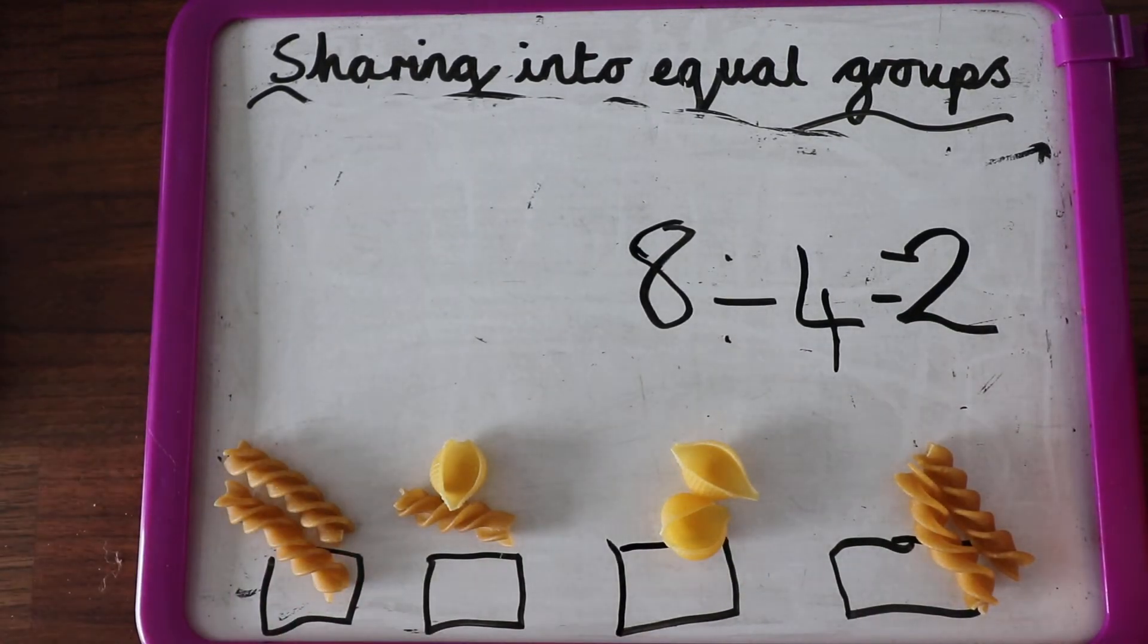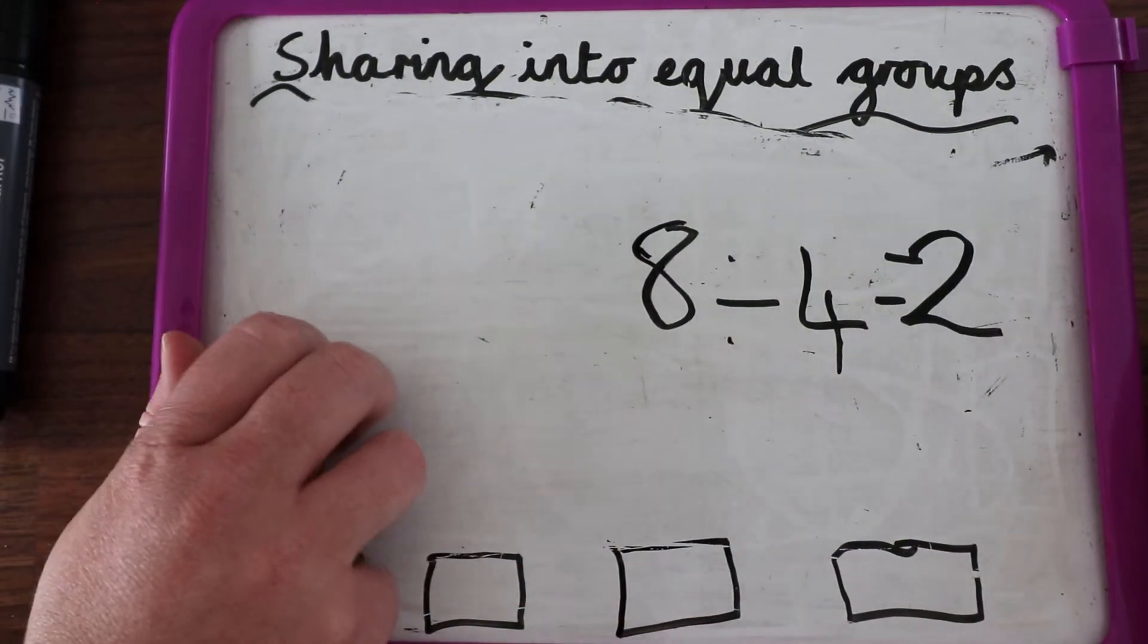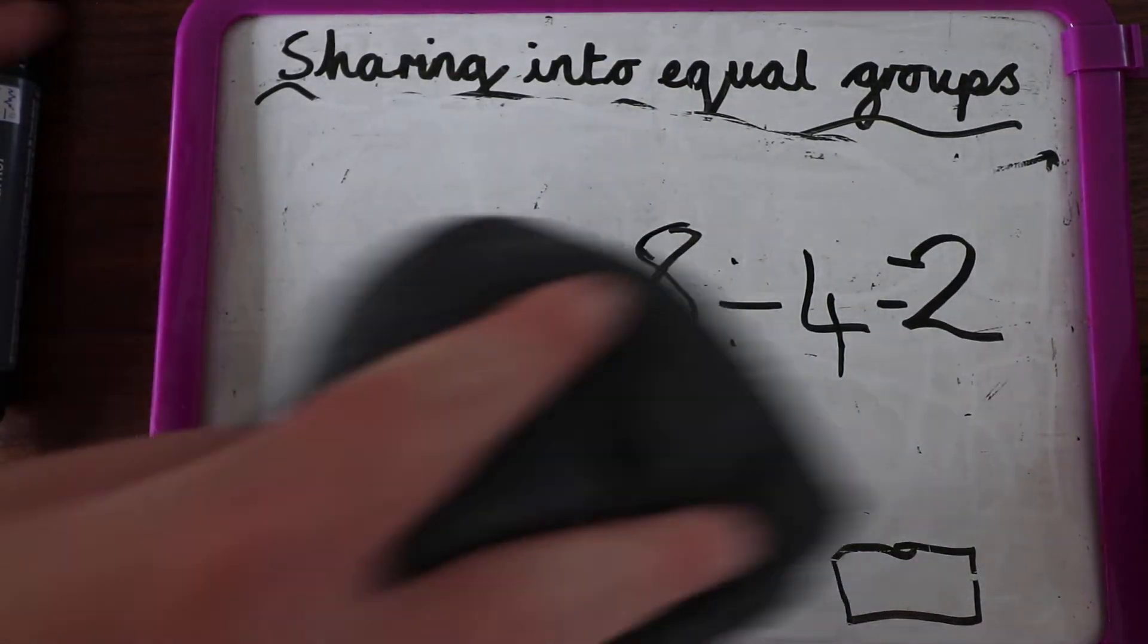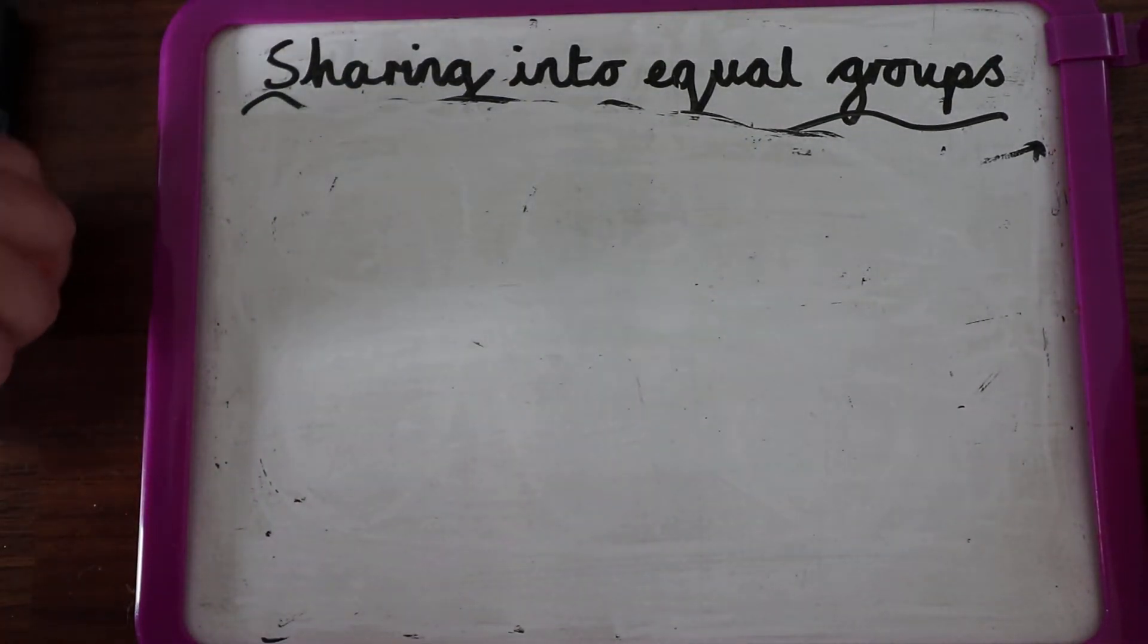So it's the same as division. It's what we're doing, but it's just using your array to help you. I'm going to give you some number sentences, and what I want you to do is to make the array and work it out that way.